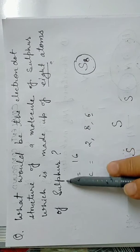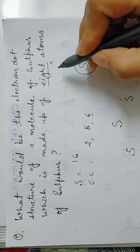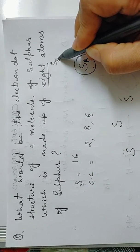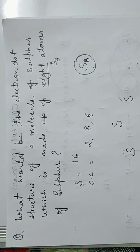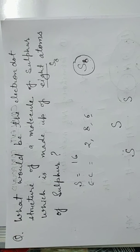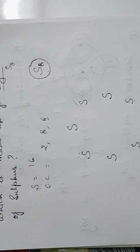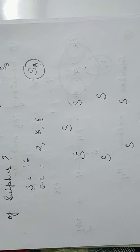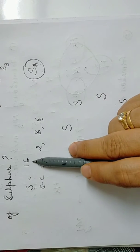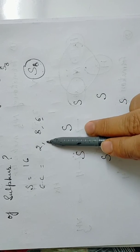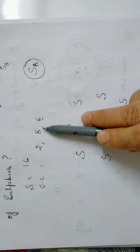Actually this is S8, sulfur with eight atoms. So let's see its dot structure. We will again start with the electronic configuration of sulfur. Atomic number is 16, so the electronic configuration is 2, 8, 6. Six valence electrons.